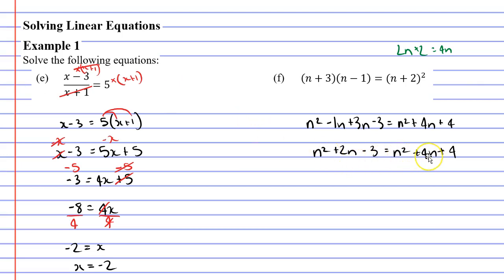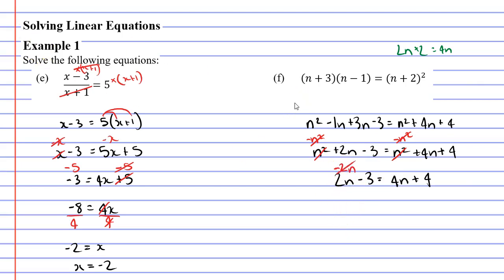For a lot of you this might look really challenging, but it's not. We're going to subtract n squared on both sides, which cancels out both sets of n squared and makes our equation a whole lot easier: 2n minus 3 equals 4n plus 4. I could subtract 4n, but that would give a negative 2n, so instead I'll subtract 2n to cancel it on the left and get a positive 2n on the right.